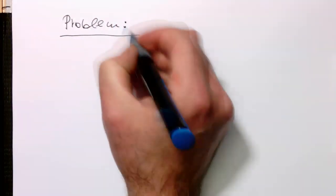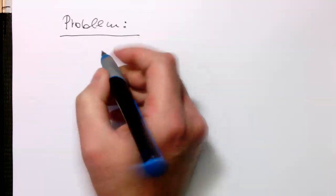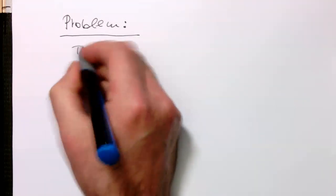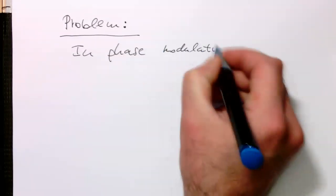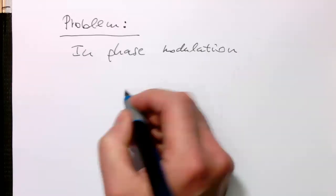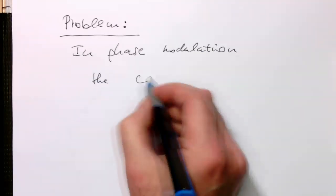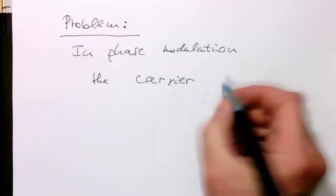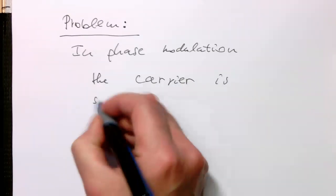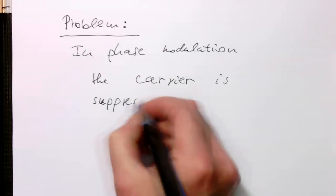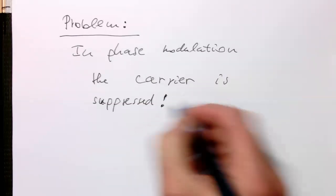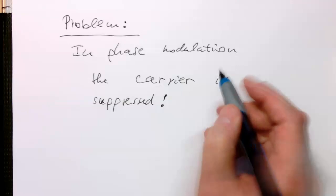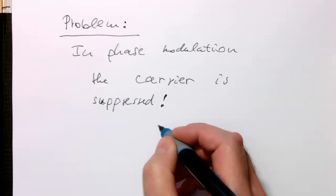The problem here is that in phase modulation the carrier is suppressed. Or in other words, the phase of the carrier or the phase of the signal is constantly changing.